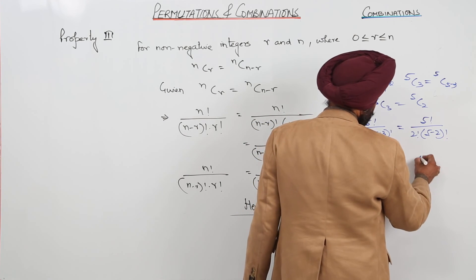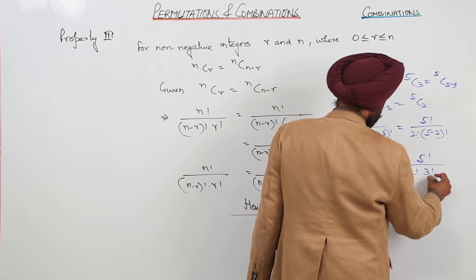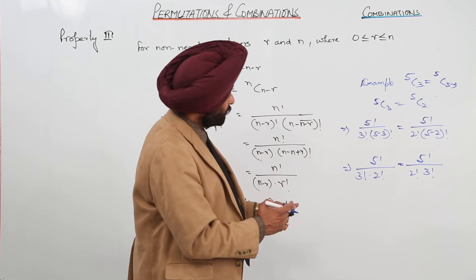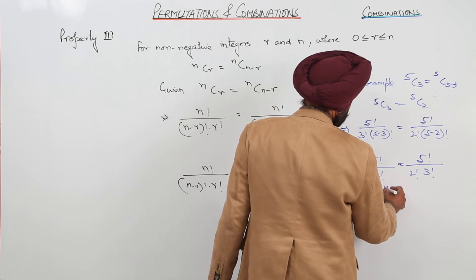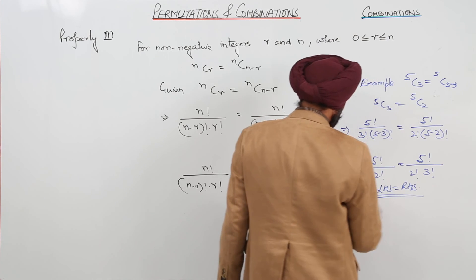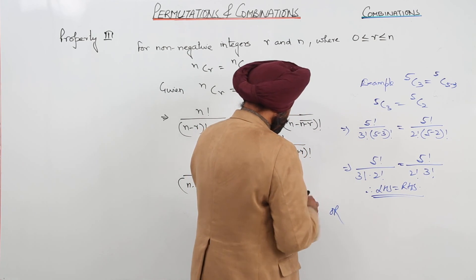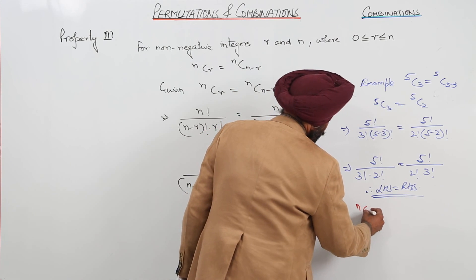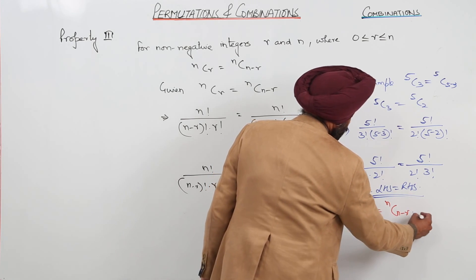And this side is 5 factorial upon 2 factorial with 3 factorial. Both are same. Therefore, left hand side is equal to right hand side. So we can write nCr is equal to nC(n minus r).